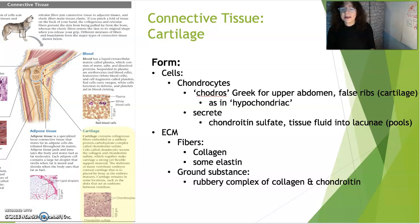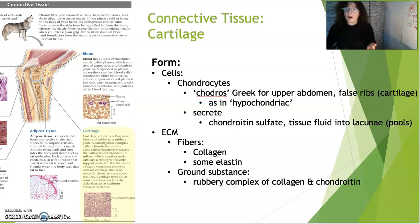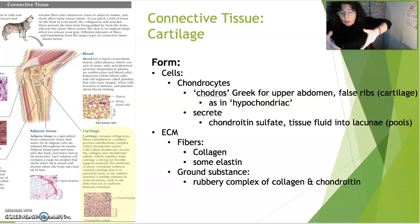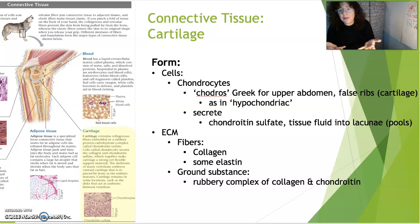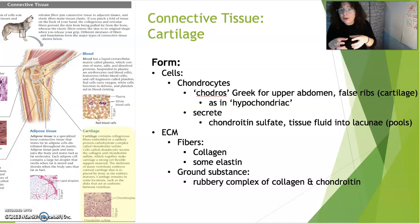Chondrocytes secrete chondroitin sulfate — you may have heard of it as a nutritional supplement. Chondrocytes release chondroitin sulfate along with tissue fluid into pools that they form. These pools are called lacunae, from the Latin word for pool, and they can house several different chondrocytes.